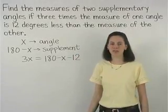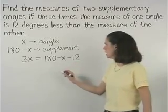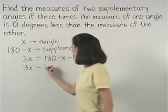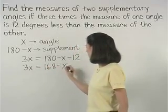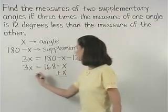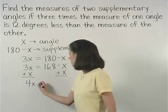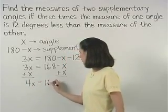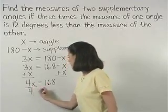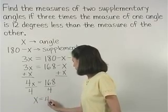Now we can solve for x by first simplifying on the right side. And we have 3x equals 168 minus x. Adding x to both sides gives us 4x equals 168. And dividing both sides by 4, we find that x equals 42.